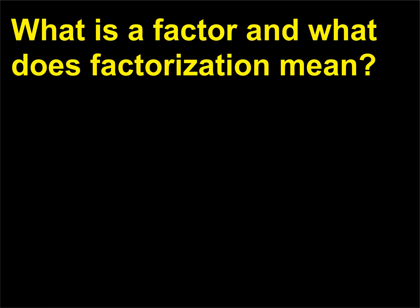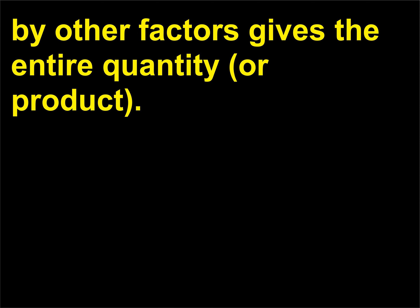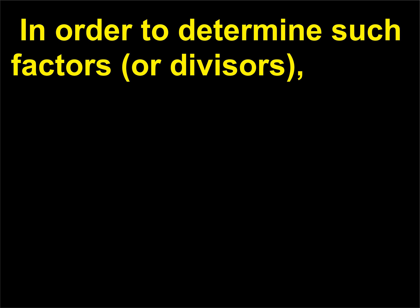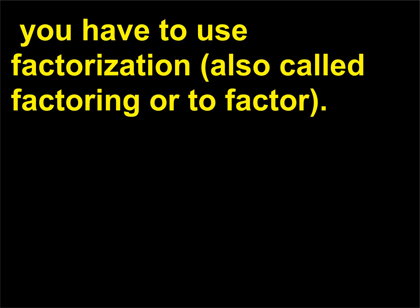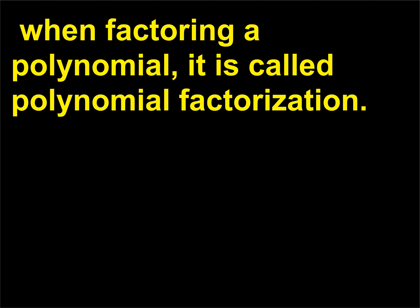What is a factor and what does factorization mean? A factor is a portion of a quantity that, when multiplied by other factors, gives the entire quantity, or product. In order to determine such factors, or divisors, you have to use factorization — also called factoring, or to factor. When factoring an integer, it is referred to as prime factorization. When factoring a polynomial, it is called polynomial factorization.